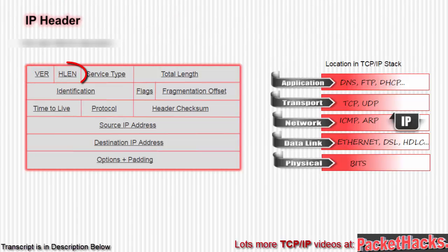Okay, the next field is the header length. Header length is the total length of the header in 4-byte words — that's 32 bits. It points to the beginning of the data. With no options, the header length is 20 bytes, so you have a value in the field of 5, which is 20 divided by 4. Add options and the value increases.